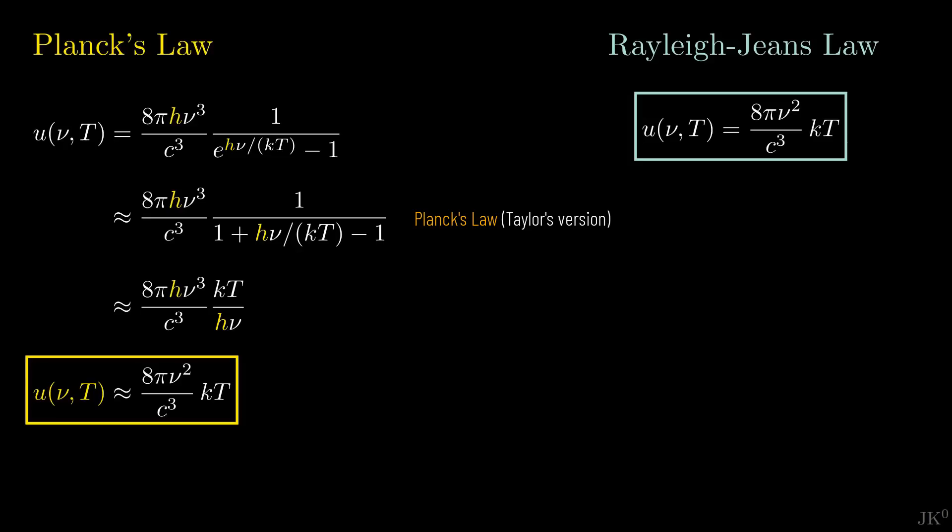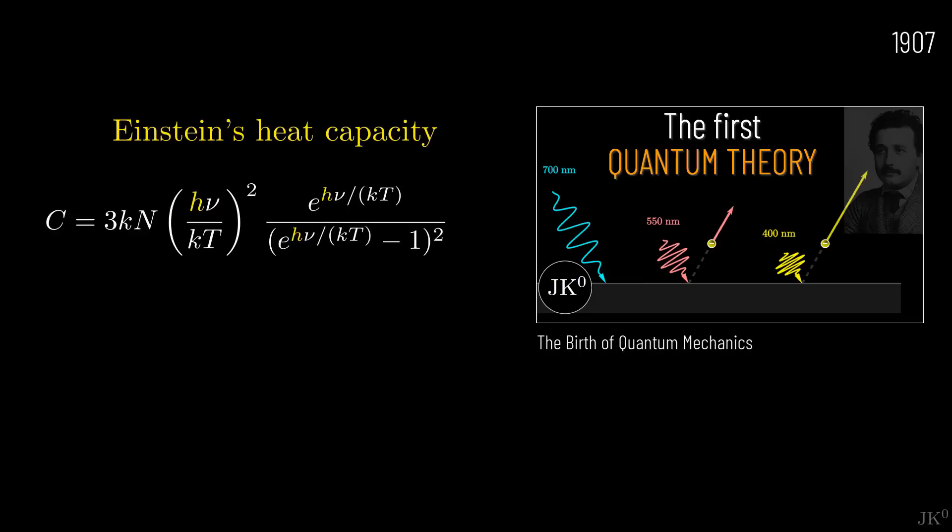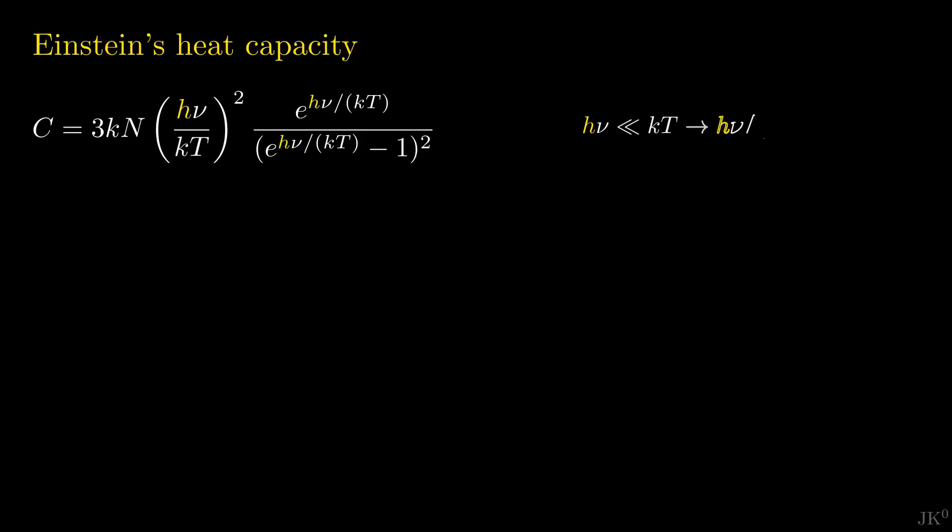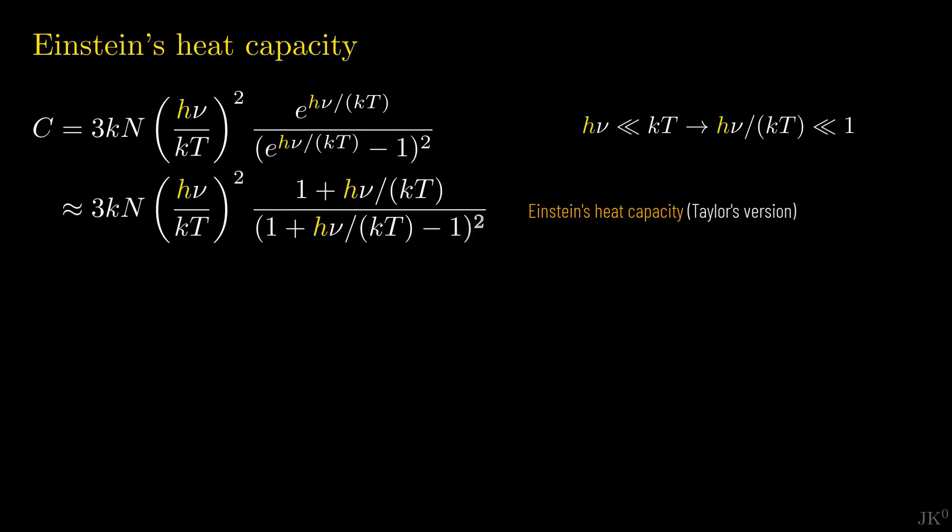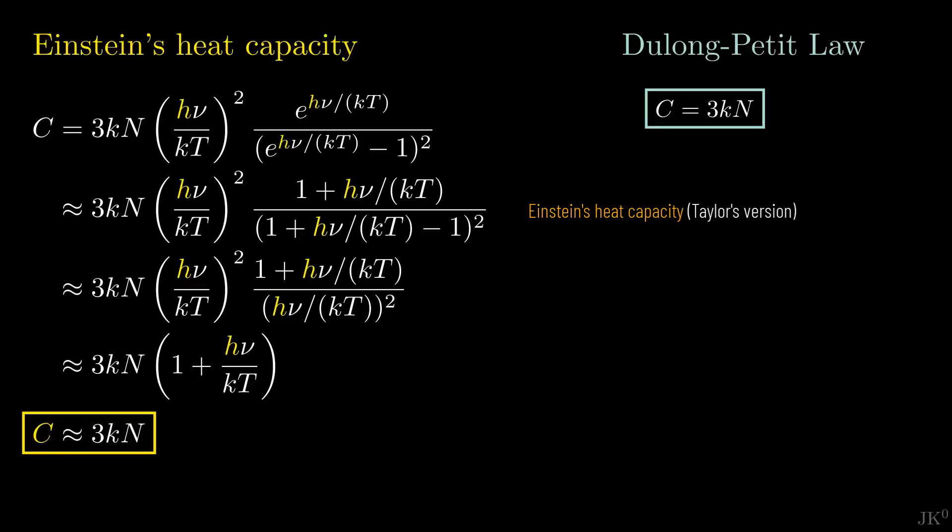Taylor series gave Planck the confidence that his quantum formula contains the classical law in a special limit. The same procedure can be applied to the heat capacity of solids. The quantum result was obtained by Einstein in 1807, which I proved in this video, and the classical result is known as the Dulong-Petit law. Again, the classical limit can be obtained by checking the thermal energy kT to be much higher than the vibrational energy of the molecules in the solid h nu. We can expand the two exponentials as Taylor series, simplify terms, and finally use again that the ratio between vibrational and thermal energy is much smaller than 1, so it can be neglected. From here, we recover the Dulong-Petit law. This is how the classical description of the heat capacity in solids can be recovered from Einstein's quantum result.